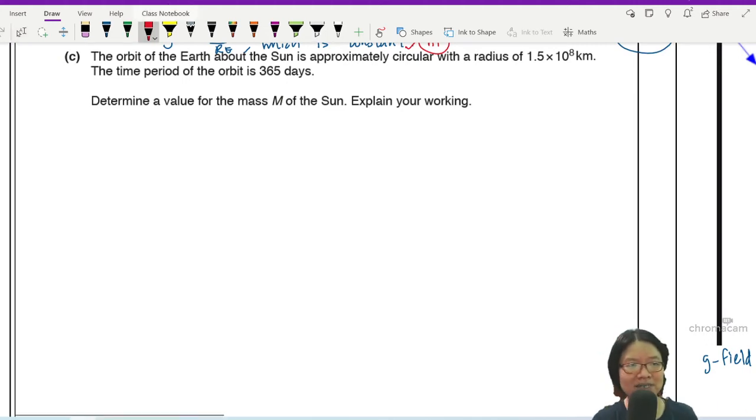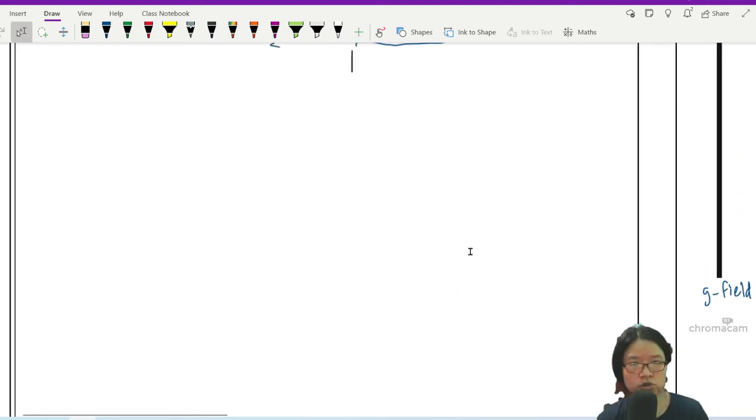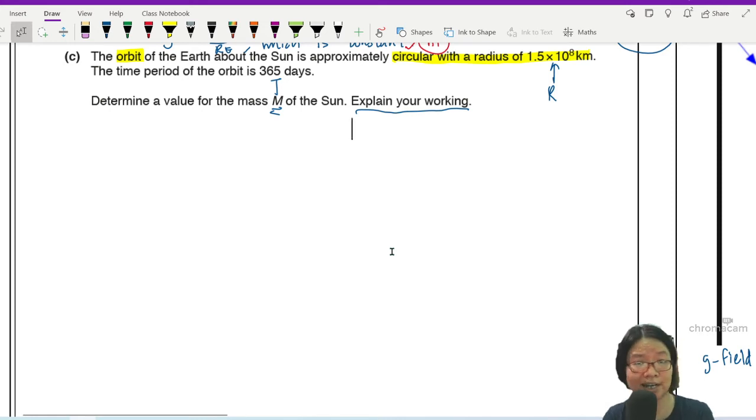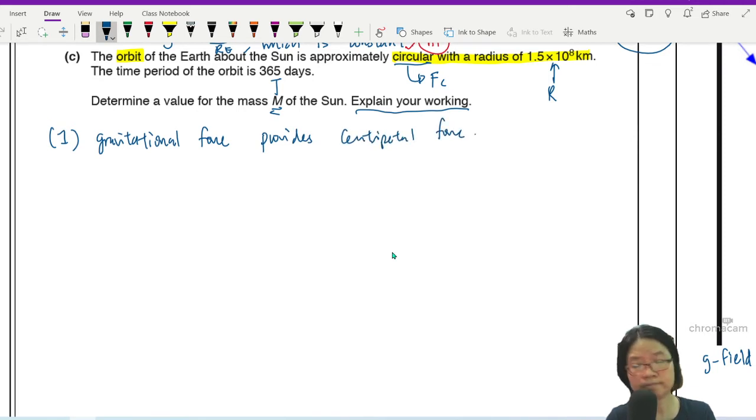Part C. The orbit of the Earth about the Sun is approximately circular. It better be circular because if not, it ain't in the syllabus. Thankfully, this is orbit, no from the surface of the Earth nonsense. So this is R. Period of the orbit is T. Determine M, the mass of the Sun. Explain your working. First thing I want to do is I'm going to scroll down and see how many marks. Five. So if it's five, then I'm going to make sure I show all my working. Beautiful and perfect. So I'm going to start off with an idea. Whenever I see a circular orbit, I think of centripetal force. So I'm going to start off with number one. Gravitational force provides the necessary centripetal force.